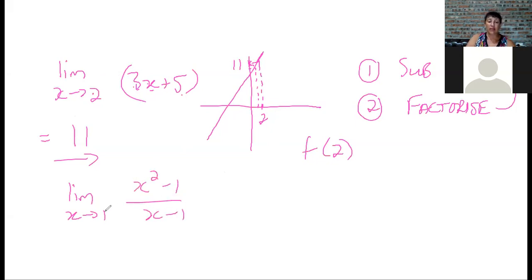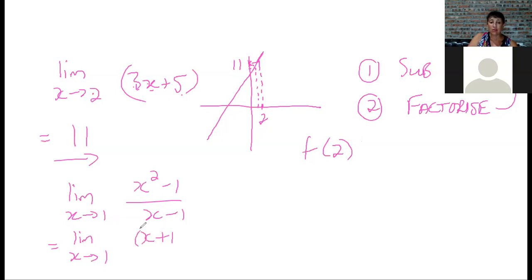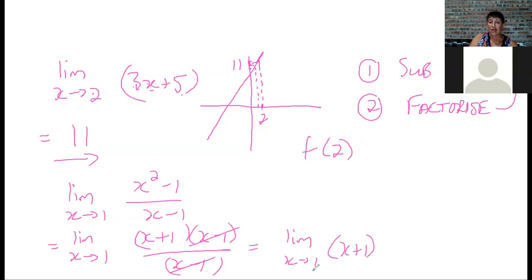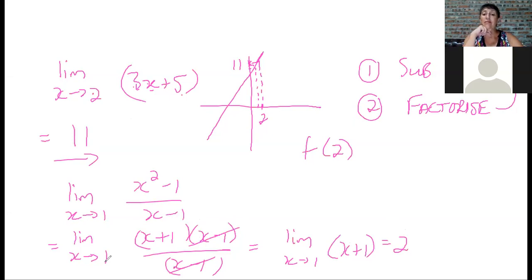When substitution gives zero in the denominator — for example, the limit as x tends to 1 of (x² minus 1)/(x minus 1) — you cannot divide by zero. So factorize: (x minus 1)(x + 1)/(x minus 1). The (x minus 1) cancels, leaving x + 1. Now substitute x = 1 to get 2.